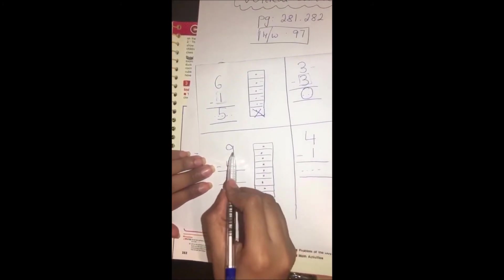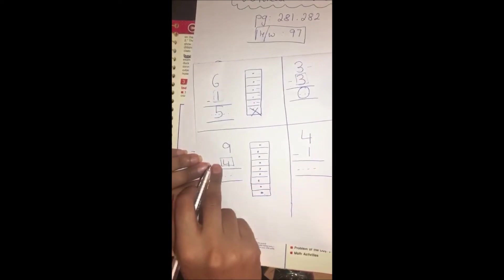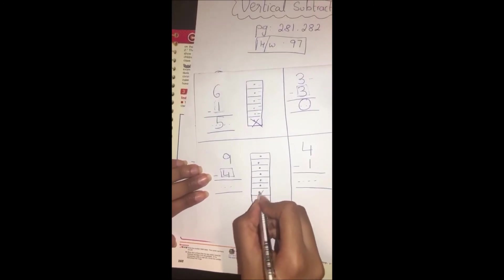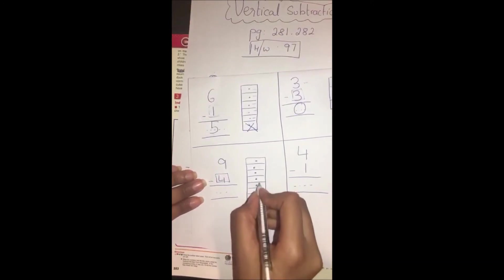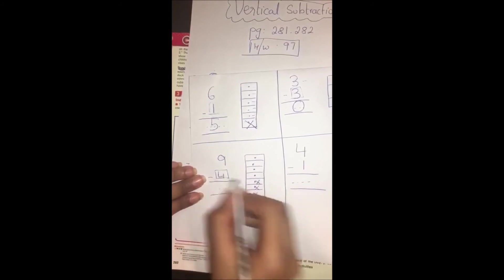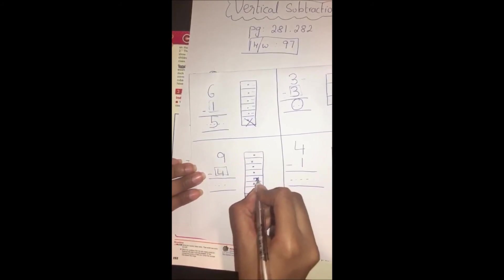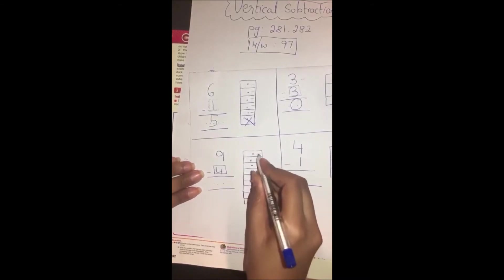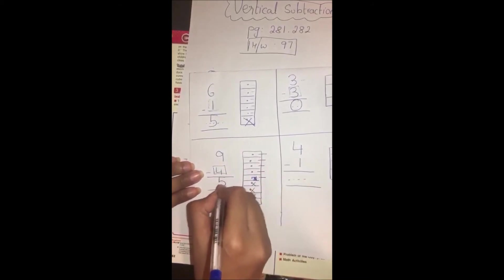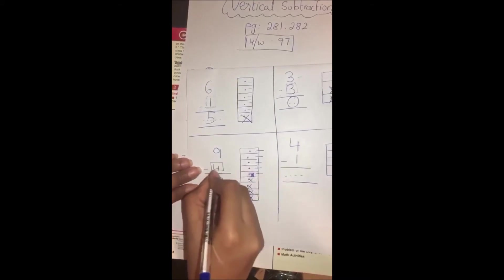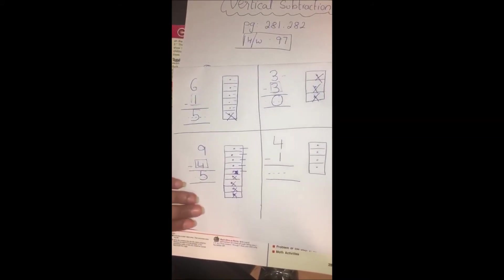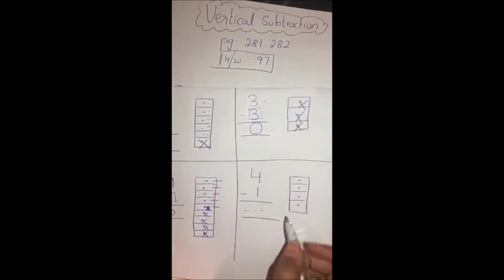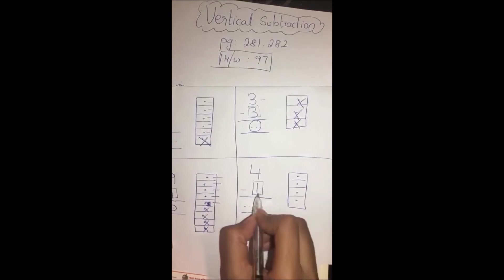Now here, 9 minus 4. In all, how many? Nine. How many are we going to take away? Four. Let's take away four: 1, 2, 3, 4. How many left? 1, 2, 3, 4, 5. 9 minus 4 gives us 5.